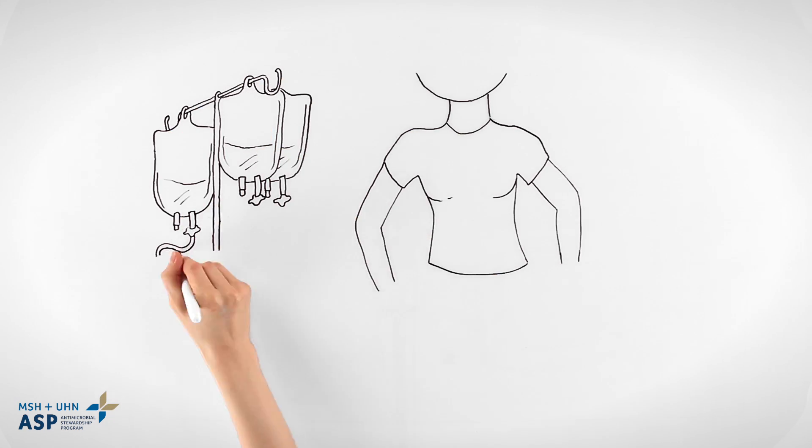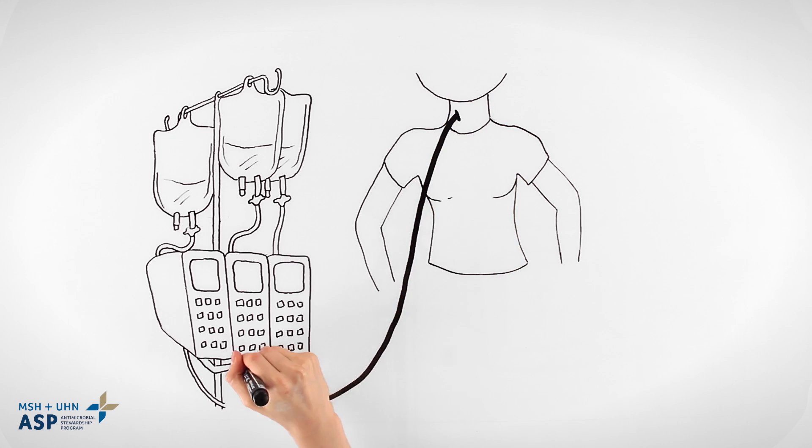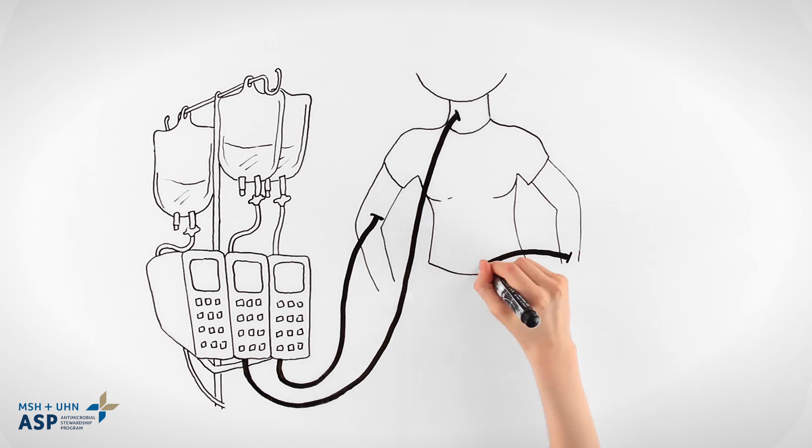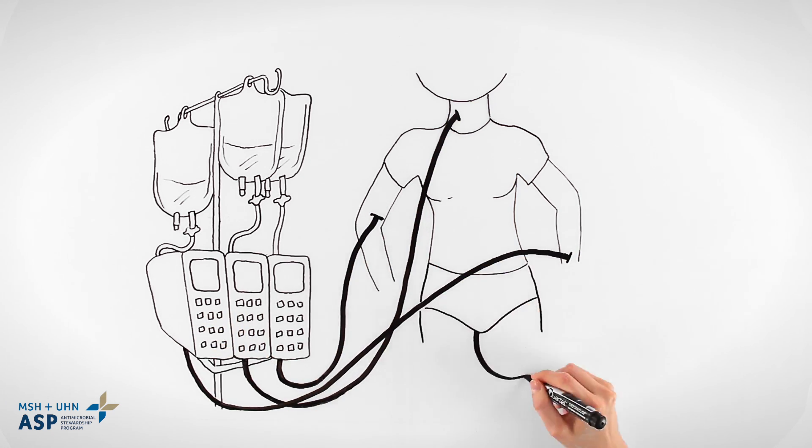She has multiple IV lines: right internal jugular, right arm peripheral, and a left radial arterial line. She also has a Foley catheter.